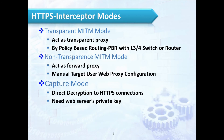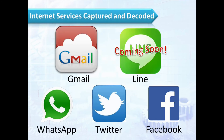The HTTPS Interceptor can operate in three modes. It can be deployed in transparent proxy mode by policy-based routing with an L3-L4 switch or router. It can also be deployed in forward proxy mode; however, the target user's web browser requires proxy configuration prior to interception. It can also be deployed in capture mode, where the unit only captures the data packets and can decrypt them later when the decryption key is provided.